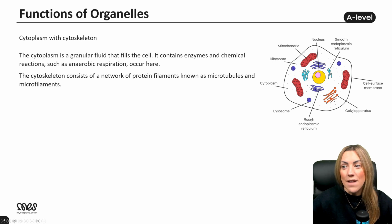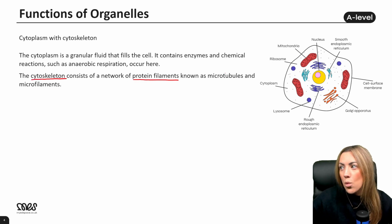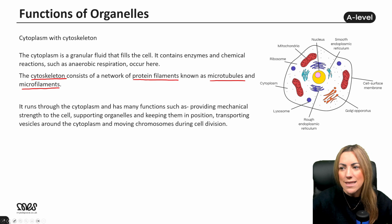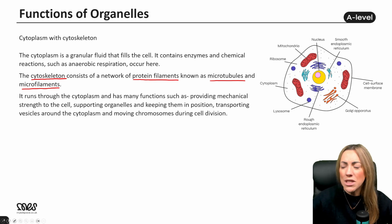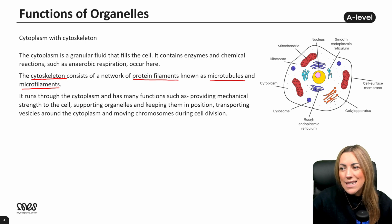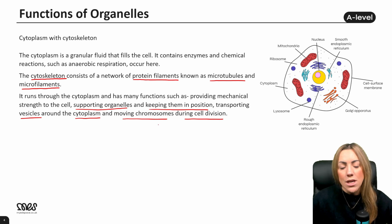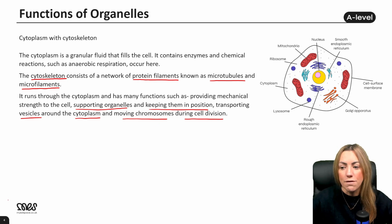Inside the cytoplasm, we find the cytoskeleton, which is a network of protein filaments — microtubules and microfilaments — that run across the cytoplasm. They provide mechanical strength to the cell and support organelles, keeping them in position. They're also used to transport vesicles around the cytoplasm and move chromosomes during cell division. If you're taking OCR biology, you might be asked to give two or three different functions of the cytoskeleton.